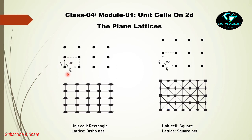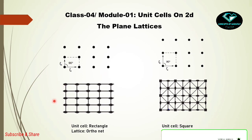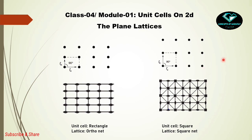The fourth lattice, the orthonet, has a rectangular unit cell — ta is not equal to tb and the angle is a right angle. It has two-fold rotational symmetry at the midpoint of lines joining lattice points, and two sets of mutually perpendicular mirror planes. The square net has four-fold rotational symmetry at the center of the square as its highest symmetry, plus two-fold rotational symmetry at the midpoints of the sides and two sets of mutually perpendicular mirror planes.